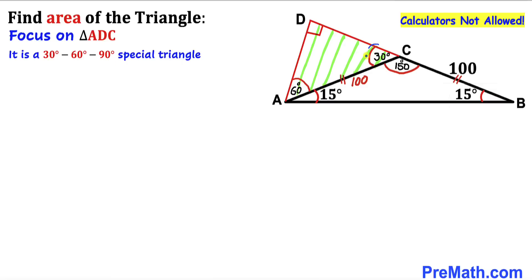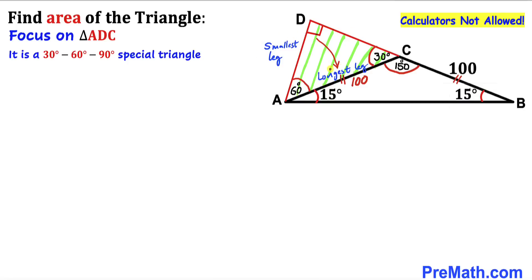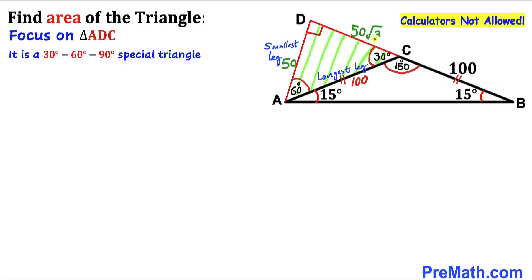In this 30-60-90 triangle, 30 degrees is the smallest angle and 90 degrees is the largest. The side opposite the smallest angle is the smallest leg, and the side opposite the largest angle is the longest leg. In a 30-60-90 triangle, the longest leg is always twice the smallest leg. If the longest leg AC is 100 units, then the smallest leg AD is 50 units, and the remaining leg CD is 50√3 units.